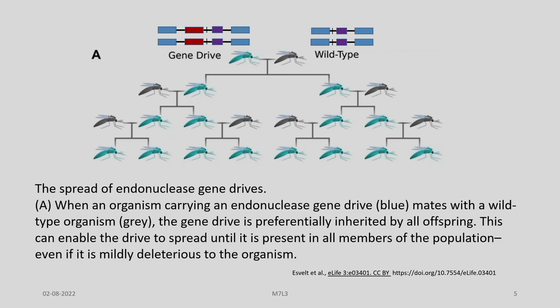So how does the spread of the endonuclease gene in a gene drive happen? When an organism carrying an endonuclease gene — shown here in blue — mates with a wild-type organism, the gene drive is preferentially inherited by all offspring. This can enable the drive to spread until it is present in all members of the population, even if it is mildly deleterious to the organism. This skewed ratio is due to CRISPR-Cas9, which helps in creating double-strand breaks and participates in the mobilization of the gene to the other chromosome.